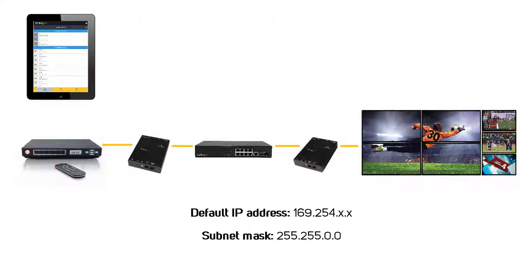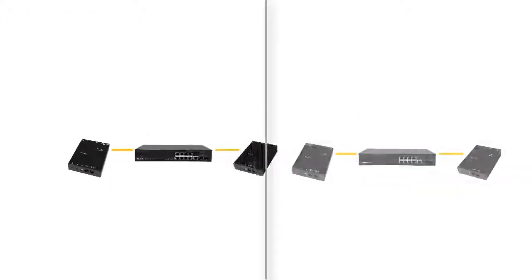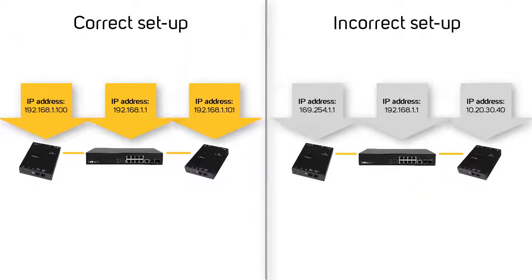All ST12 MHDLAN transmitters and receivers must be on the same network for them to communicate with each other. If you need to change the IP address to fit your network infrastructure, make sure you keep all devices on the same network. Here's an example of a correct setup and an incorrect setup. For more information on changing your IP address, please check the description.